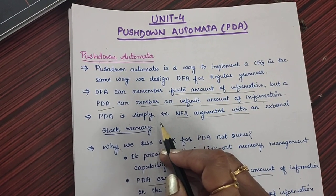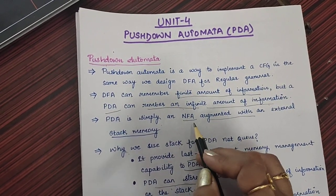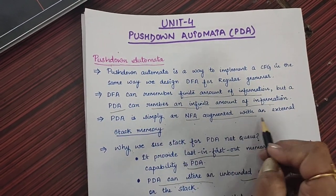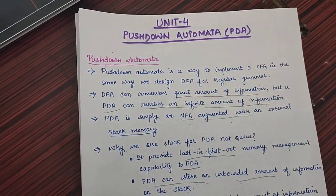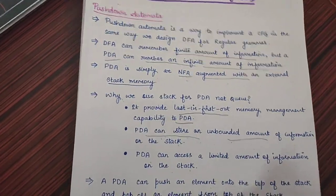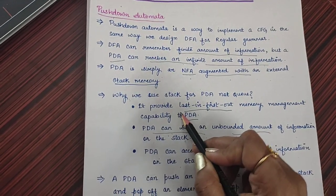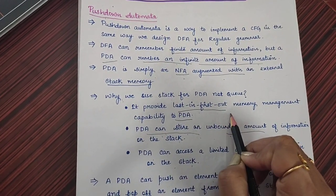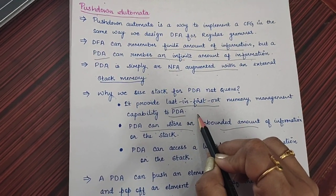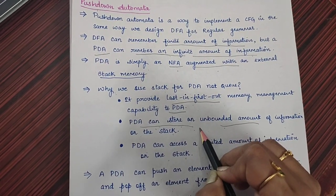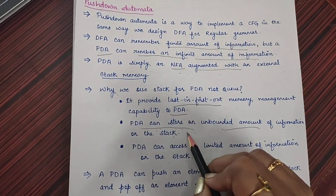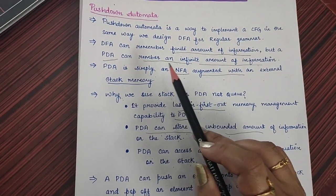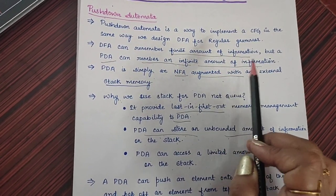In simple words, we can say pushdown automata is an NFA which is augmented with an external stack memory. Now the question arises, why we have selected stack, not queue? Because it provides last in first out memory management, and this adds capability to pushdown automata. It can store an unbounded amount of information on the stack, and that makes pushdown automata remember an infinite amount of information.